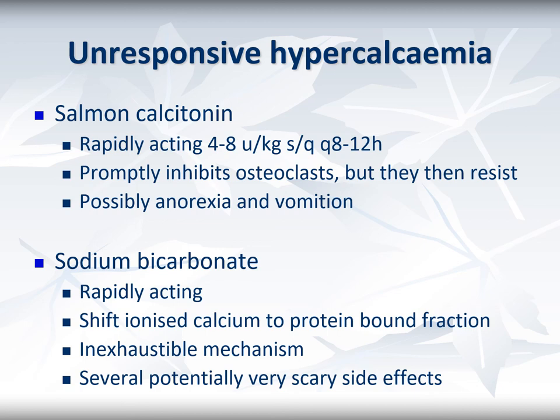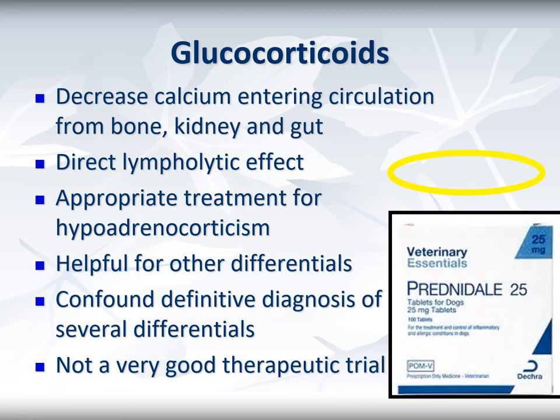Calcitonin and the previous measures are so effective that the need to use sodium bicarbonate for emergency therapy — to increase pH, increase calcium binding to albumin, and promote calciuresis — is rarely felt, though this approach does not suffer from the exhaustion seen with calcitonin. However, glucocorticoids such as prednisolone can be very effective at comprehensively decreasing ionized calcium directly and through indirect mechanisms such as a lympholytic effect in lymphoma patients. Glucocorticoids are the correct treatment for hypoadrenocorticism and effective for many other differentials, but are entirely wrong for infectious diseases, so ideally they should only be reached for once the diagnosis has been robustly established. Because glucocorticoids are comprehensive therapy for several differentials, they make for a poorly specific clinical trial.